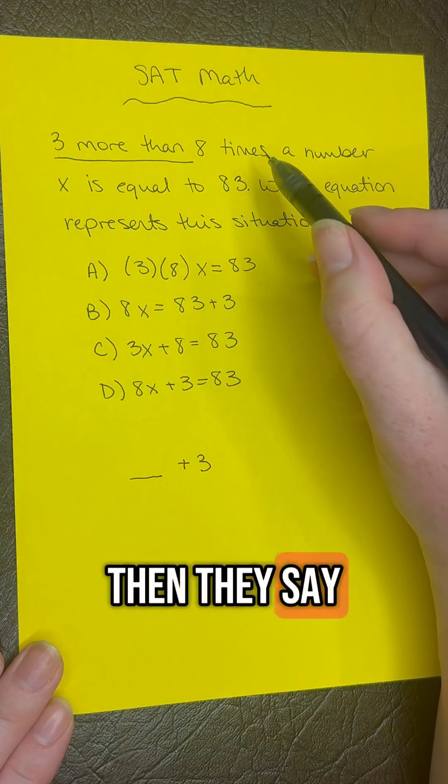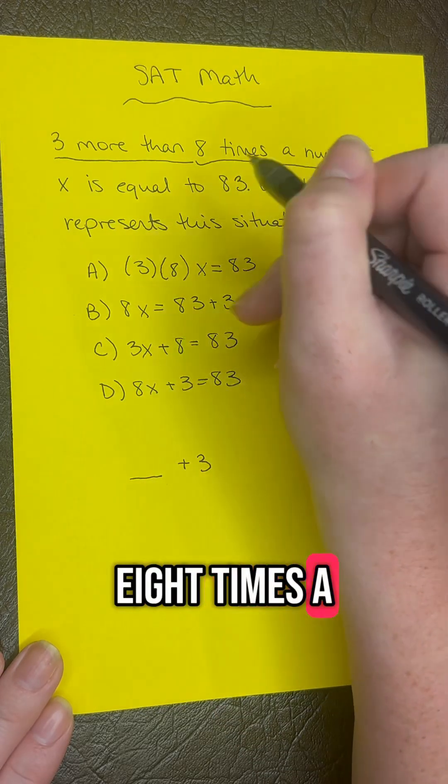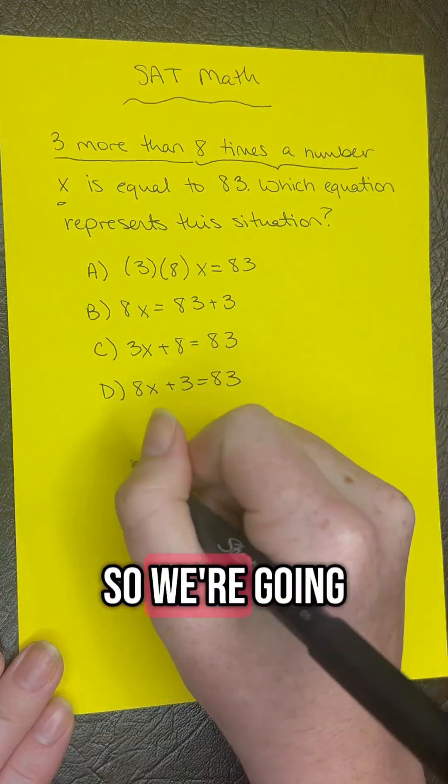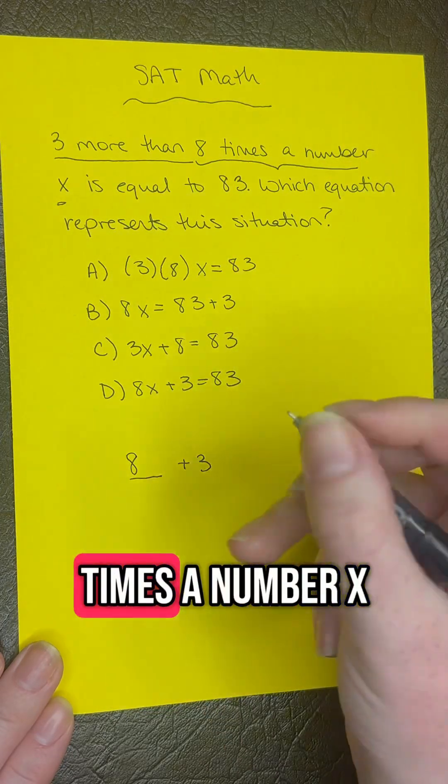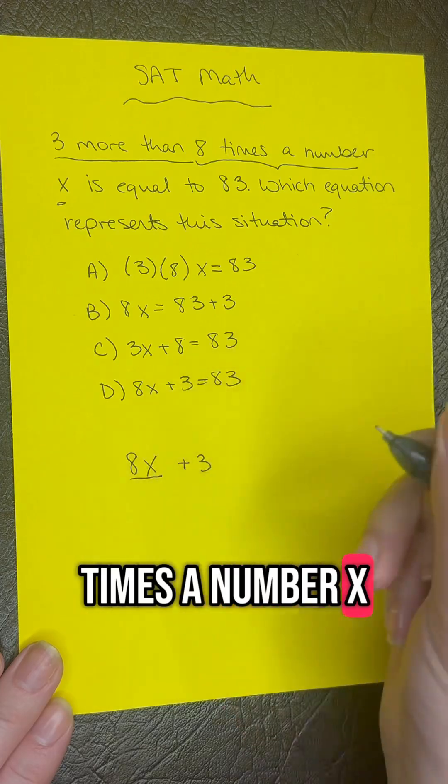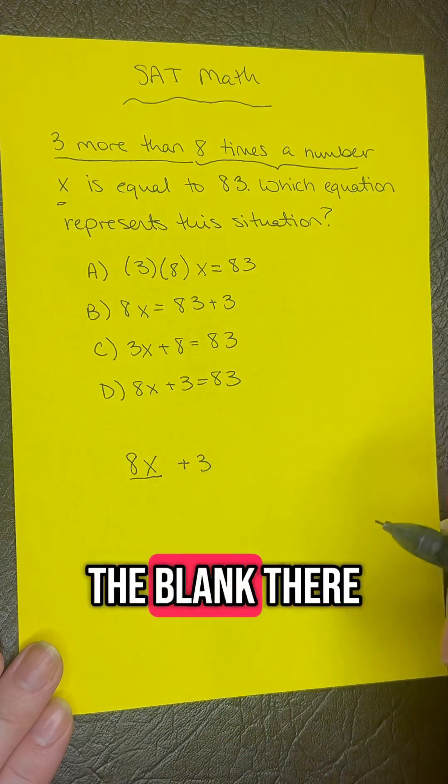Then they say eight times a number x. So we're going to have eight times a number x. So you put 8x in the blank there.